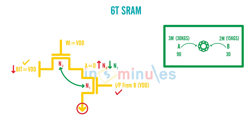We cannot lose the zero because we want to read the zero. So who is trying to keep node A at zero? It is n1. So in this fight, because we want to ensure that node A is kept at zero and does not lose its value, n1 should be stronger than n3.